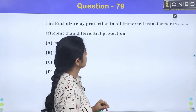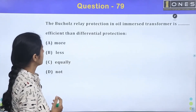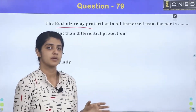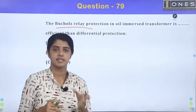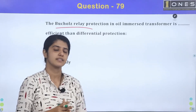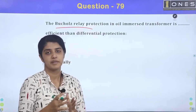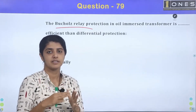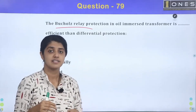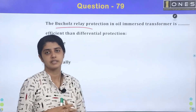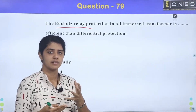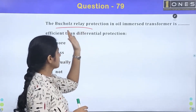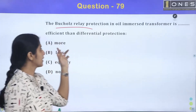The oil-immersed transformer uses Buchholz relay protection, which is more efficient than differential protection. The main tank is connected to the conservator tank. The Buchholz relay detects changes in oil — when it is heated, water vapor and gas changes are used to activate the mercury switch, triggering the relay.